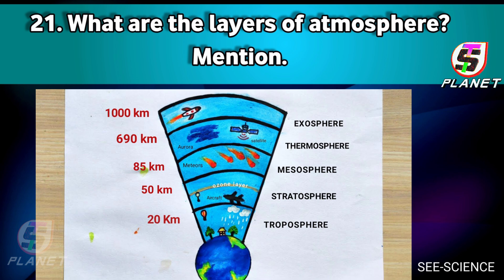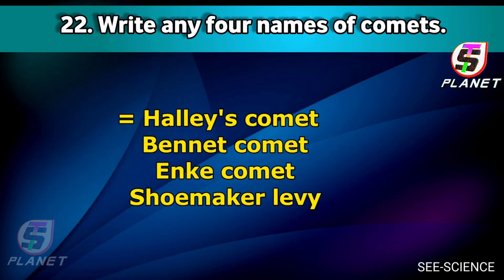Here are the five layers of the atmosphere: troposphere, stratosphere, mesosphere, thermosphere, and exosphere. Their respective heights can be seen on the screen.